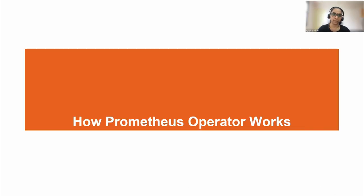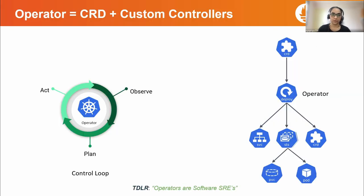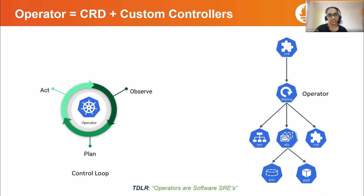Now let's see how the Prometheus operator works. We will talk about operator pattern, custom resource definition, and custom controllers. Operator pattern was introduced by CoreOS as a class of software that operates other software. The function of the operator pattern is to capture the intention of how a normal human operator would manage a service. In short, we can term operators as software SREs. Operators are built on two key principles of Kubernetes: custom resources, implemented by way of custom resource definition, and custom controllers. A custom resource is an extension of the Kubernetes API that provides a place where you can store and retrieve structured data — that is the desired state of your application. Custom controllers observe this custom resource and take action to adjust the Kubernetes cluster to the desired state.